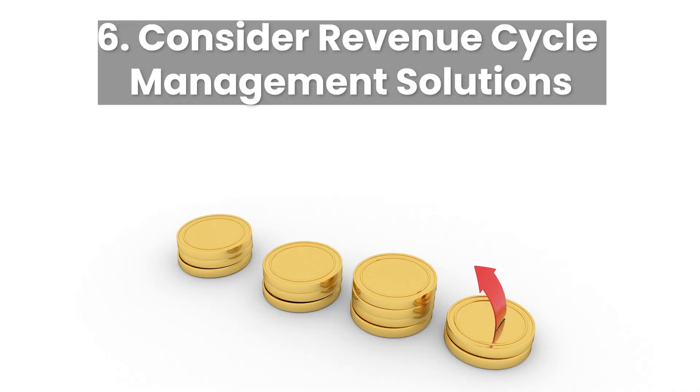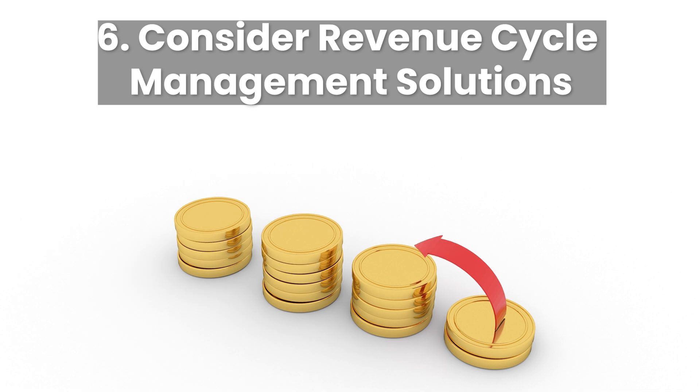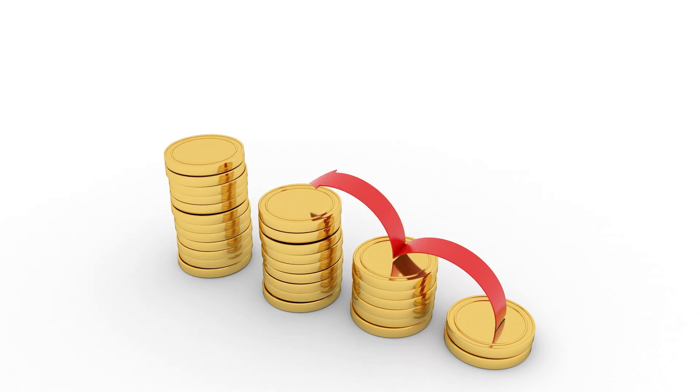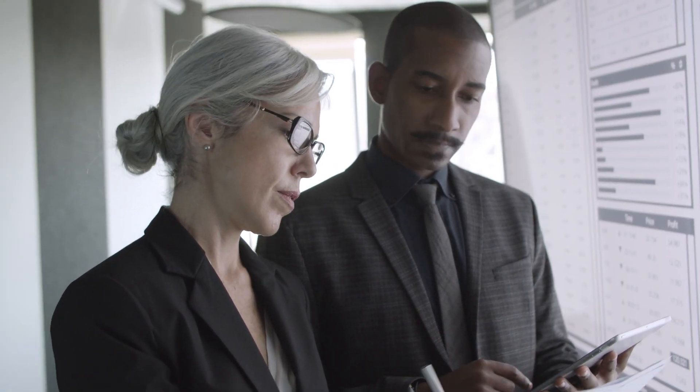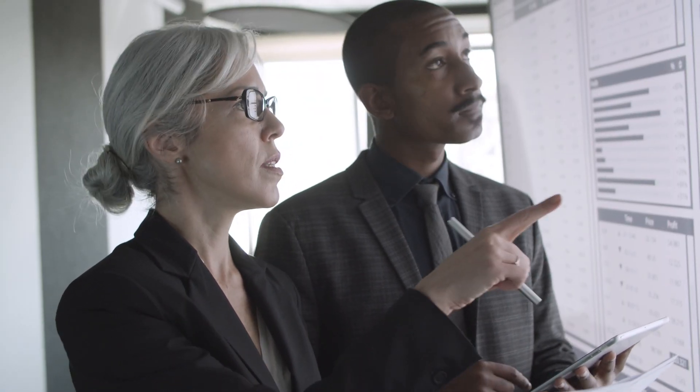Number six: consider revenue cycle management solutions. These can reduce errors, ensure compliance, and support your billing team in meeting payer requirements. These systems often include access to specialists who can assist in navigating the complex rules of institutional billing, reducing the risk of claim denials and helping streamline the revenue cycle.